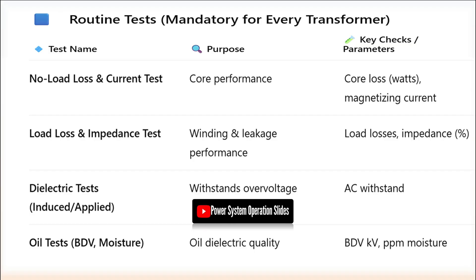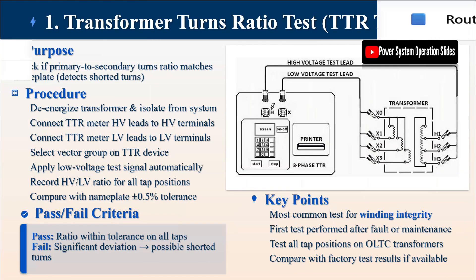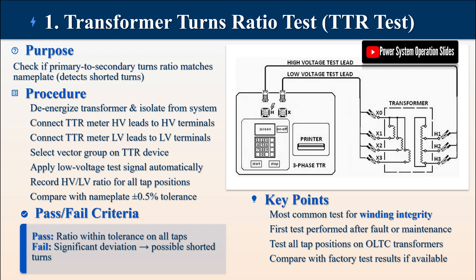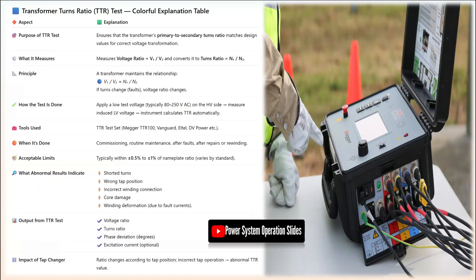Test 1: Transformer Turns Ratio (TTR) Test. The Transformer Turns Ratio (TTR) test is fundamental for verifying the integrity of transformer windings by checking if the primary-to-secondary turns ratio matches the nameplate specifications. This test is particularly effective at detecting shorted turns and windings, which can significantly impact transformer performance. The procedure involves de-energizing the transformer and isolating it from the system.